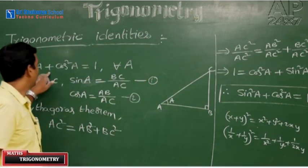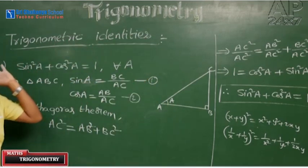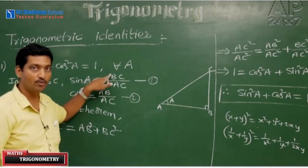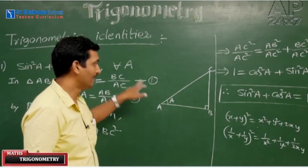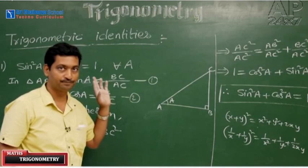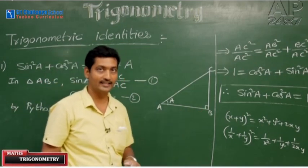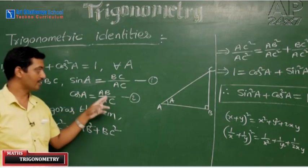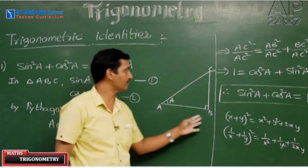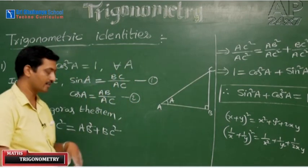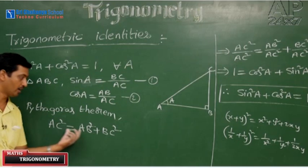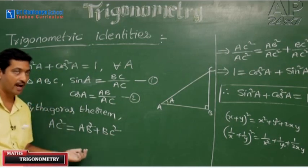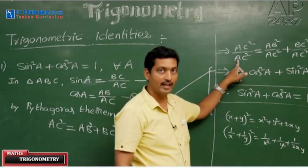Now, come to the trigonometric identity. sin²A + cos²A = 1. It is true for all values of A in triangle ABC, where angle B is 90 degrees. I am defining sin A as BC/AC and cos A as AB/AC. By the Pythagoras theorem, AC² = AB² + BC². Now, divide throughout this equation by AC².